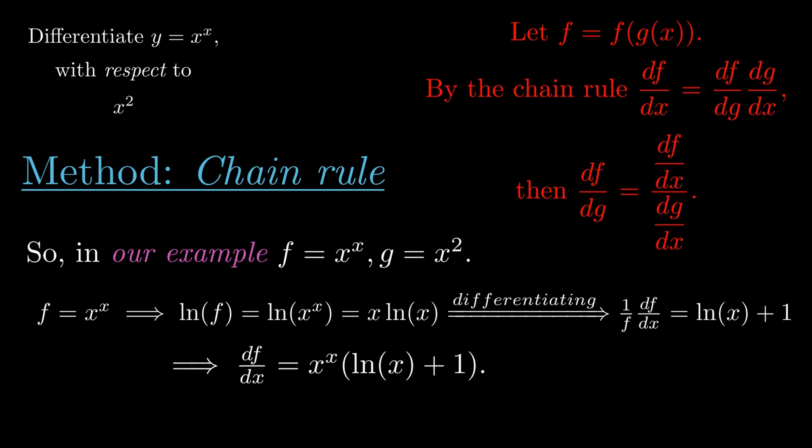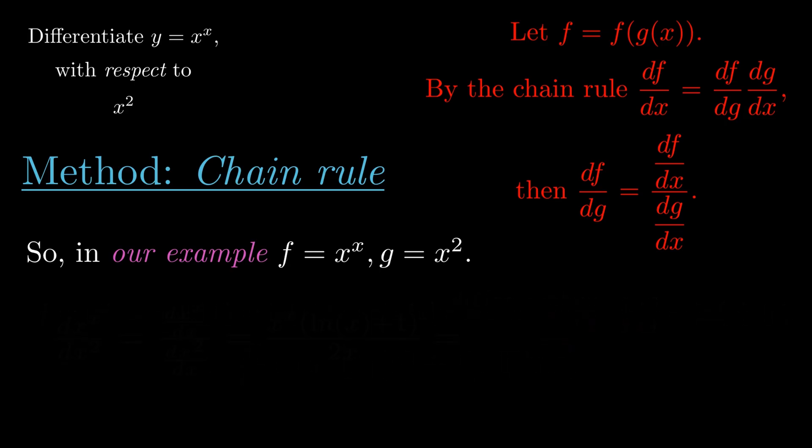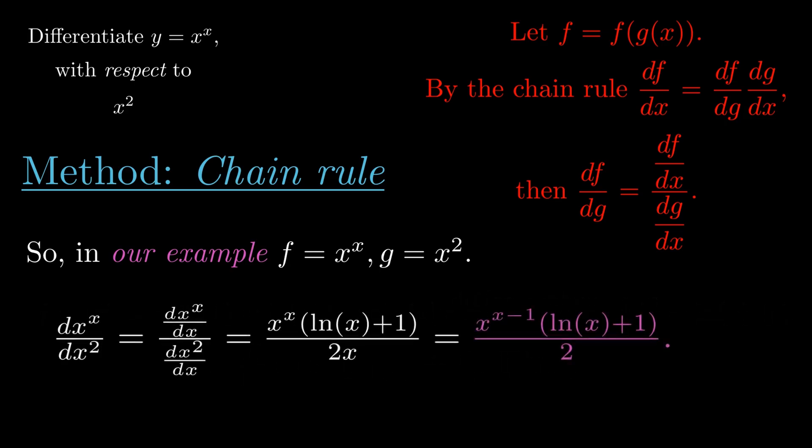We're now in a position to apply our formula. The derivative of x raised to x with respect to x squared equals the derivative of x raised to x with respect to x, divided by the derivative of x squared with respect to x, which equals x raised to x multiplied by (ln(x) + 1), divided by 2x. Simplifying, we get our final answer: x raised to x minus 1 multiplied by (ln(x) + 1), divided by 2.